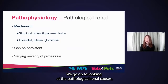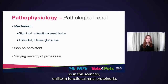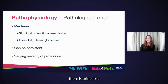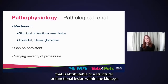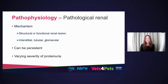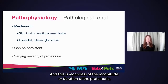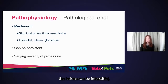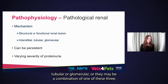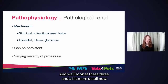Looking at the pathological renal causes: unlike in functional renal proteinuria, there is urine protein loss attributable to a structural or functional lesion within the kidneys, regardless of the magnitude or duration of the proteinuria. The lesions can be interstitial, tubular, or glomerular, or they may be a combination of those three.